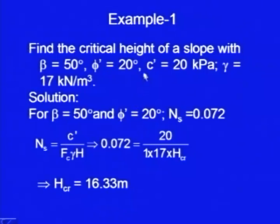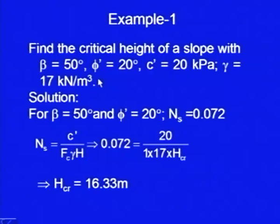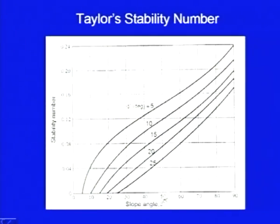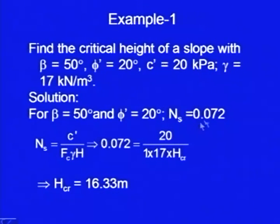Let us demonstrate the applicability of this chart using this example: find the critical height of a slope. Here β is given as 50°, φ' is given as 20°, c' is 20 kN/m², and γ is 17 kN/m³. So β is 50 and φ' is 20. Looking at the chart, here it is φ = 25 and this is φ' = 20, so this value is somewhere here — it is a little less than 0.08. You can exactly interpolate it; it comes out to be around 0.072.